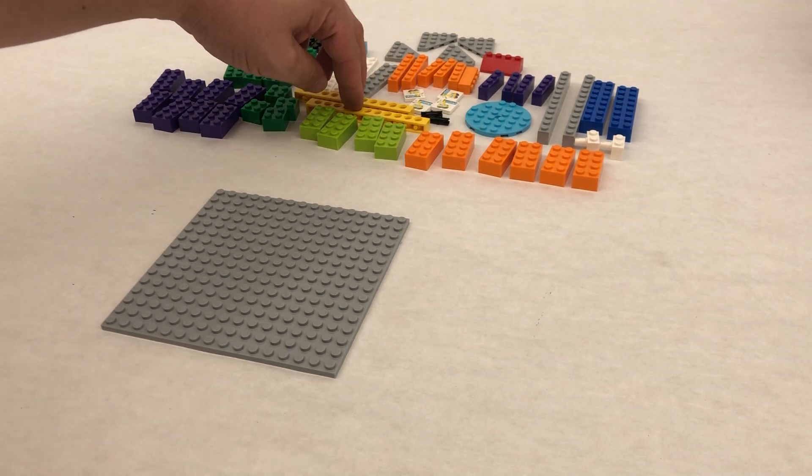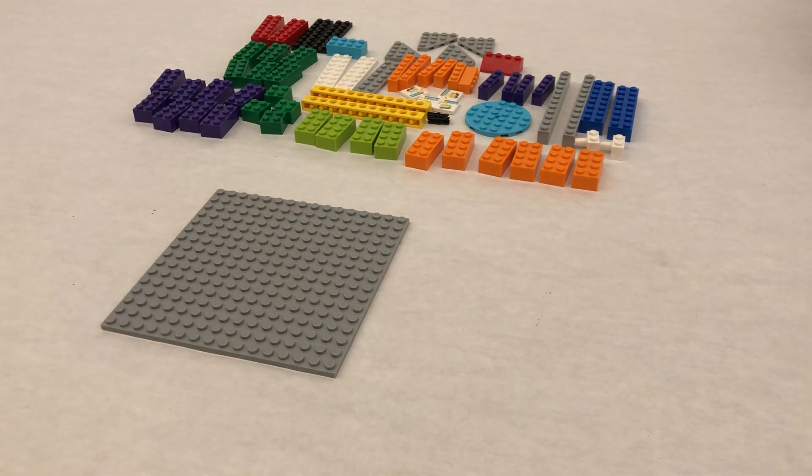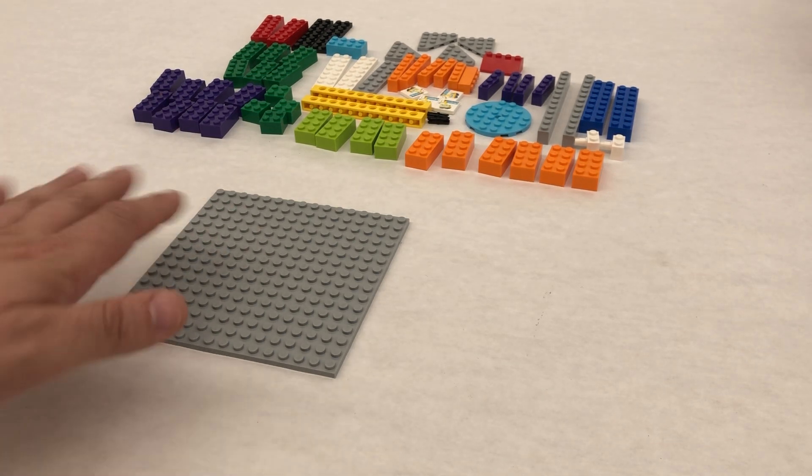Just so you know, you're gonna have to use two of these yellow Technic bricks and two of the black pins. Those are gonna come from the crane build, so you're gonna have to disassemble that in order to build our catapult today.